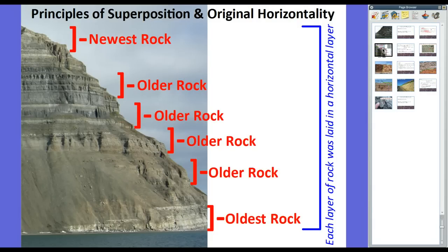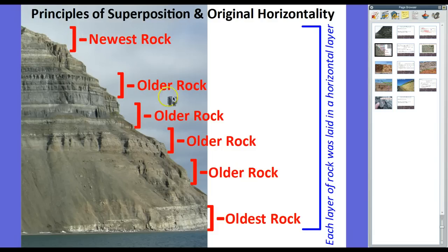Here is superposition and original horizontality in action on a cliff in England. If we look down here, we have our oldest rock at the bottom. Then we have rock above it, and at the top we have the newest rock. Below the newest rock is older rock, then older rock below it, then older rock, and finally at sea level we have the oldest. And if we go under sea level, the rock is even older, going all the way down deep into the lithosphere.